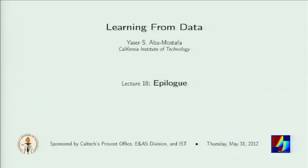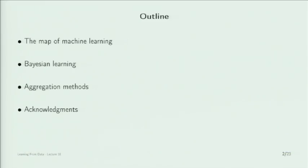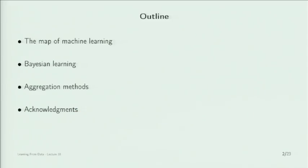Today's lecture is the final lecture, and I am going to use it to give the big picture of machine learning — to fit the material we covered within that big picture, and then tie up a couple of loose ends relevant to it. The outline: first, I'll talk about the map of machine learning, because machine learning is pretty diverse. We will see what we covered and how you can pursue it further. Then we will take two topics and discuss them in some detail. Finally, I'm going to acknowledge the people who have contributed greatly to this course.